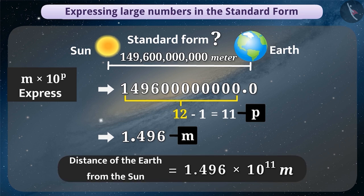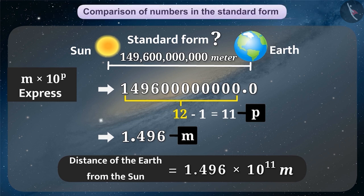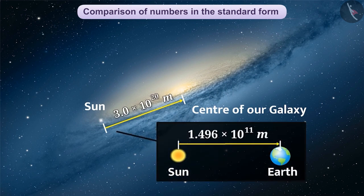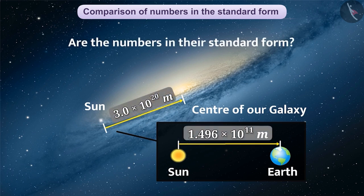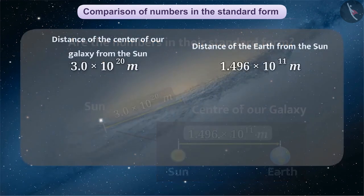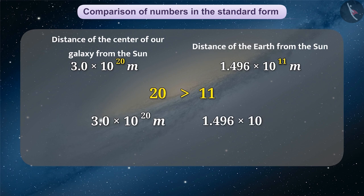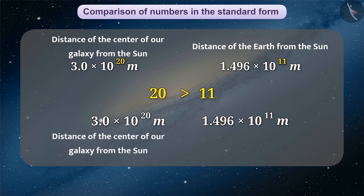As you can see, we can easily read and write numbers in their standard form. We can also easily compare numbers using their standard form. For example, let's compare the distance of the center of the galaxy from the sun and the distance of the earth from the sun. For comparison, we first check that both numbers are in standard form and have the same unit. Next, we compare the powers of 10 in both numbers. Since 20 in 10 to the power of 20 is greater than 11 in 10 to the power of 11, we can say that 3.0 into 10 to the power of 20 metres is greater than 1.496 into 10 to the power of 11 metres. This means the distance of the center of the galaxy from the sun is greater than the earth's distance from the sun. In this way, take any two large numbers, express them in their standard form, and compare them.